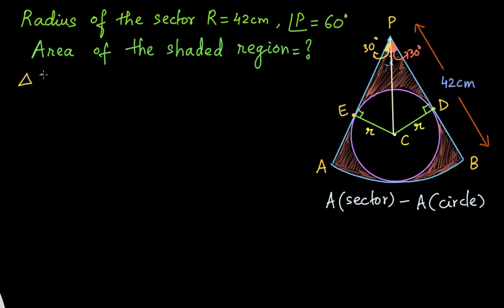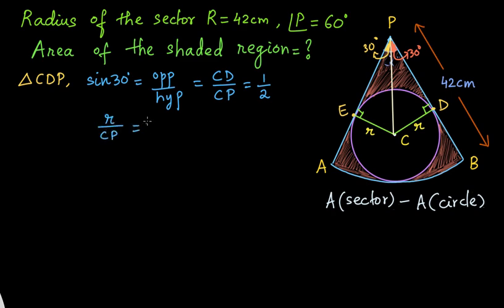So I will take right angle triangle CDP. In this triangle I will now take sine of 30 degree. So we know that sine is opposite by hypotenuse. In the figure, opposite side of 30 degree is CD. CD upon hypotenuse CP. This is equal to sine 30 degree which is half. What is CD from the figure? CD is the radius r. CD by CP is equal to half. By cross multiplication we get the length of CP as 2 times r. So CP is equal to 2r.